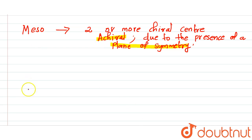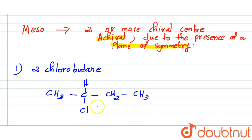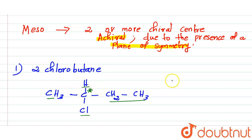Let's check the options. The first one is 2-chlorobutane. The structure of 2-chlorobutane is CH3-CHCl-CH2-CH3. In this compound we can see one asymmetric carbon — this carbon is the chiral center. To this carbon, four different groups are attached: one methyl, one hydrogen, one chlorine, and one ethyl group.